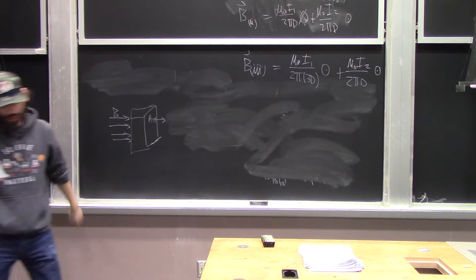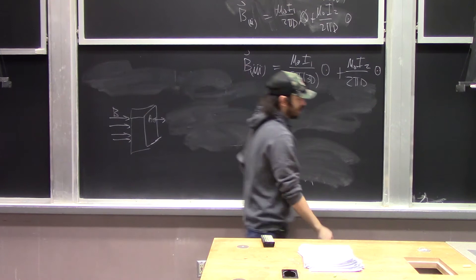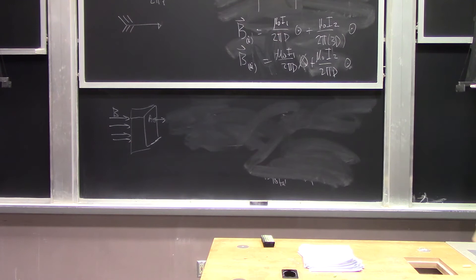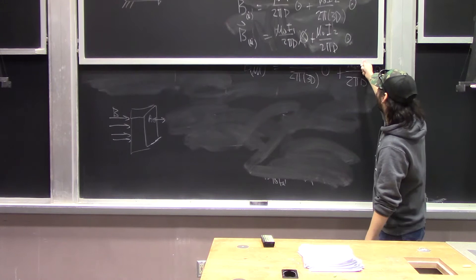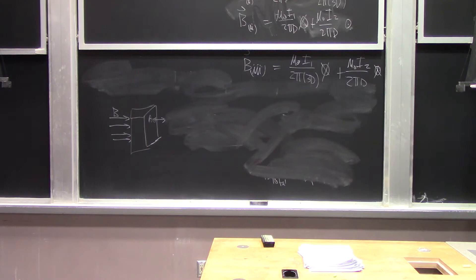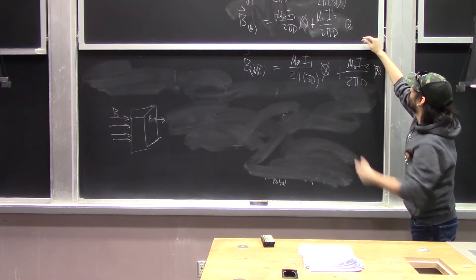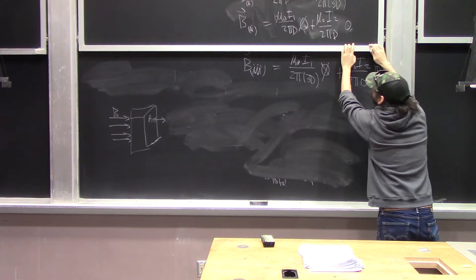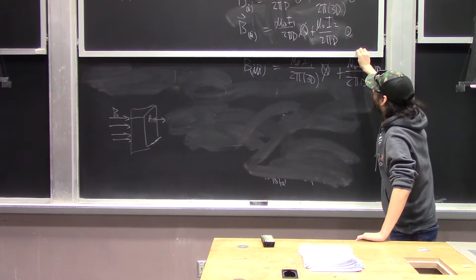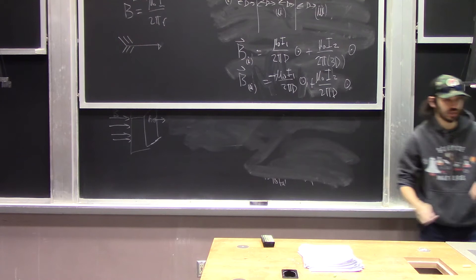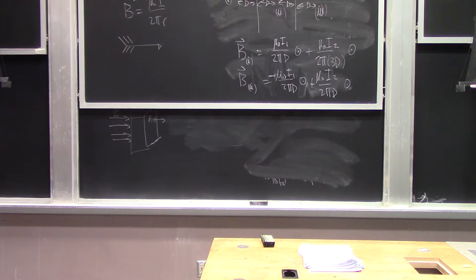For points 1 and 3, both contributions point the same direction so we just add them together by factoring out the unit vector and plugging in numbers. For point 2, since one field points in and the other points out — and 'in' is just negative 'out' — we take the difference between those two contributions. Then we plug in numbers to get the answer.